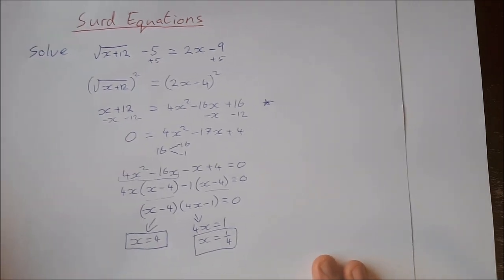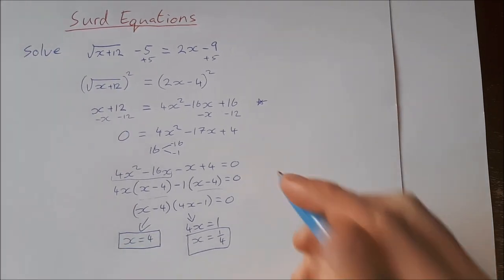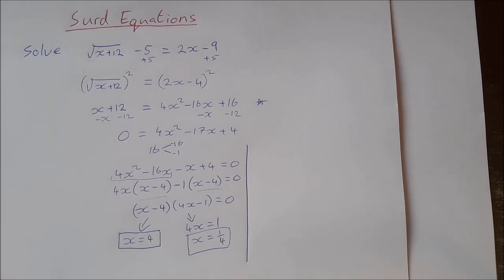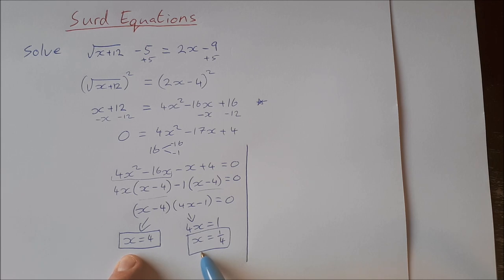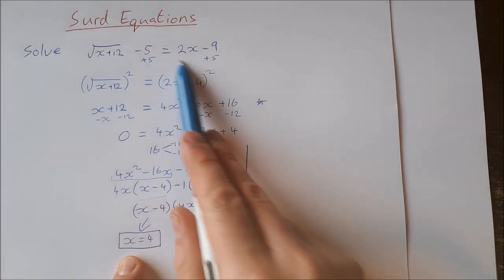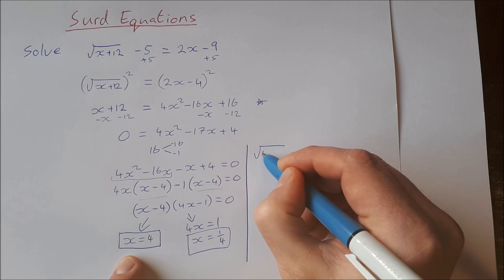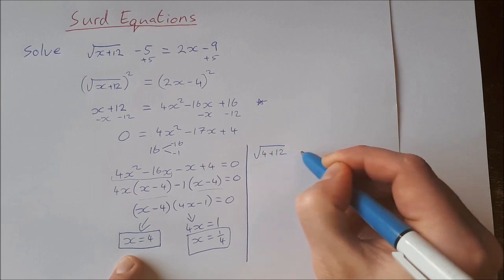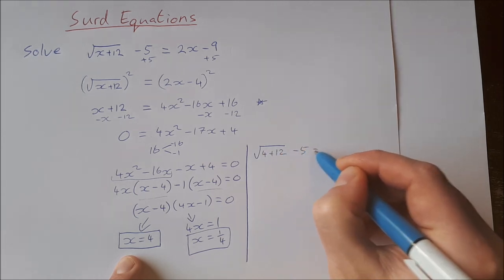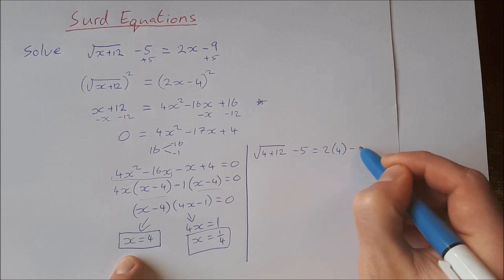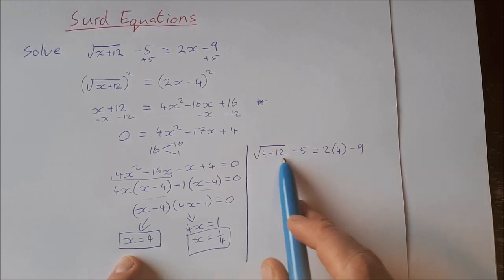Now when we're dealing with radical equations, we need to check our solutions, because when we square a radical equation we don't always get two solutions that work — quite often one of them does not work. So let's start by checking x equals 4; we substitute it into our original equation.